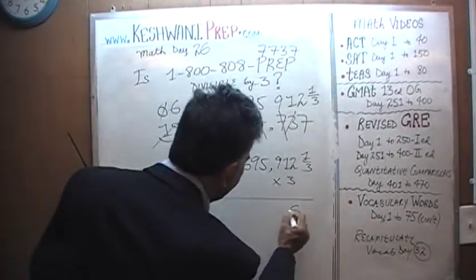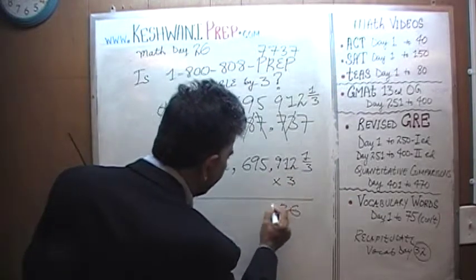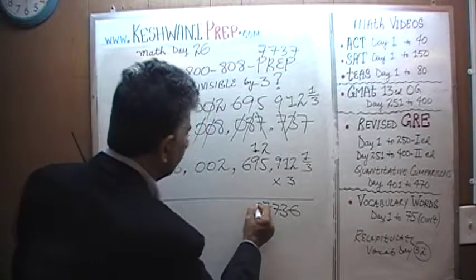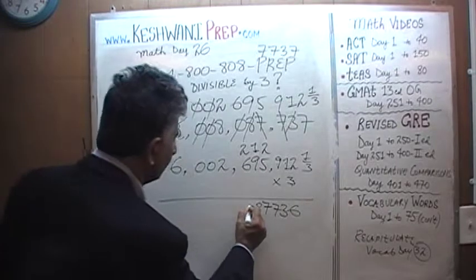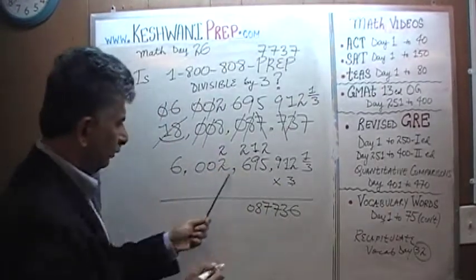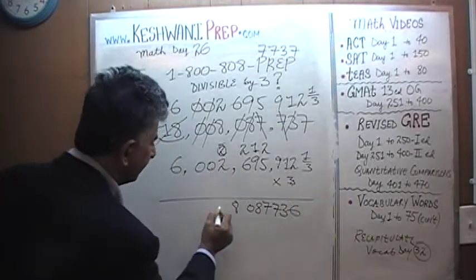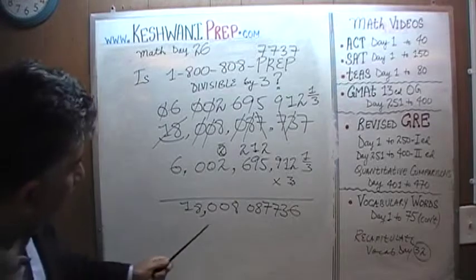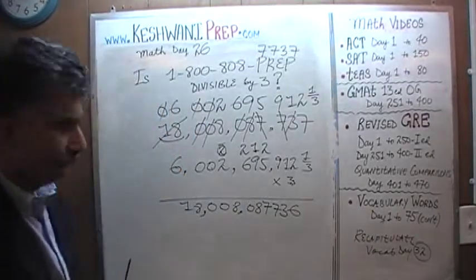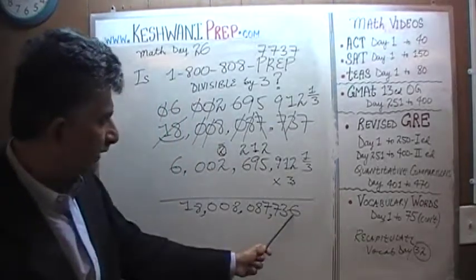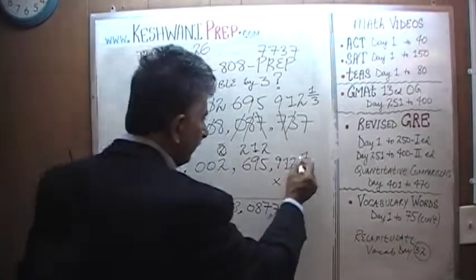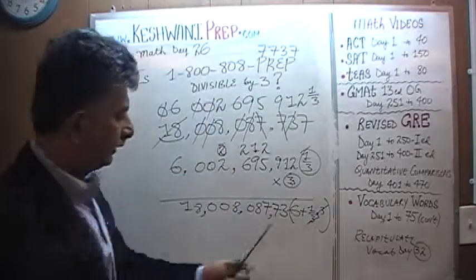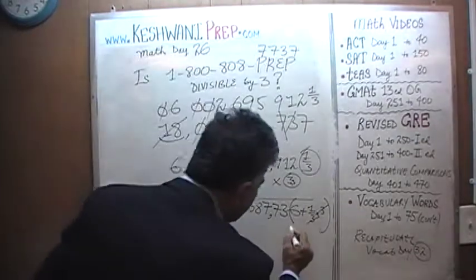2 3's are 6. 3 1's are 3. 9 3's are 27, carry 2. 3 5's are 15 plus 2 is 17, carry 1. 9 3's are 27 plus 1 is 28, carry 2. 6 3's are 18, 18 plus 2 is 20, 0, carry 2. 2 3's are 6, 2 3's are 6 plus 2 is 8. 3 times 0 is 0, 0, 0. And then 6 3's are 18. We get 18 billion, we get our 18 billion, 8 million, 87 thousand, 736. We get 737 just because we have to multiply one-third times 3. So this is 6 plus one-third times 3. One-third times 3 is 1. So 6 plus 1, the unit digit becomes 7.